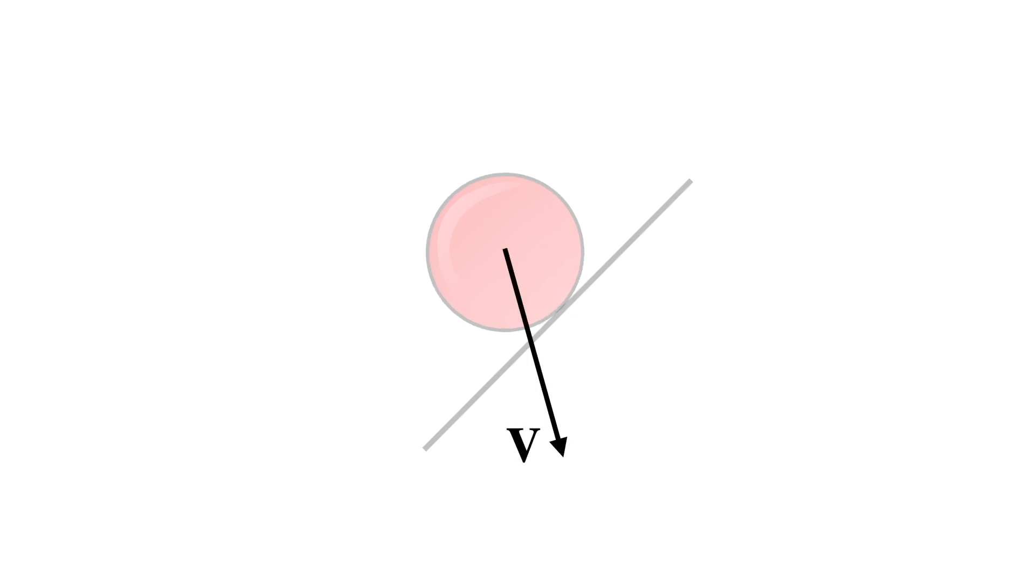When the ball hits the wall, its velocity changes. Specifically, the component of velocity that is perpendicular to the wall gets inverted. To make this happen, you decompose the velocity into two components. V_N is perpendicular to the surface, and V_T is parallel or tangent to the surface. They are given by these formulas. You then invert V_N and add V_T to get the reflected velocity.